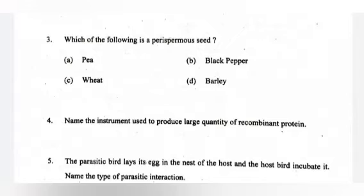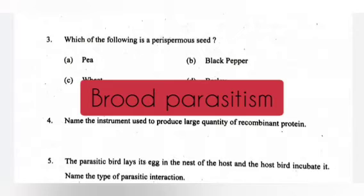Question 5. The parasitic bird lays its egg in the nest of the host and the host bird incubates it. Name the type of parasitic interaction. Answer: Brood parasitism.